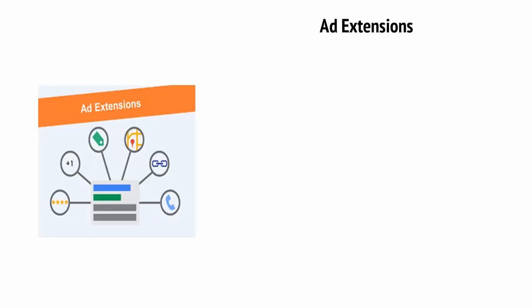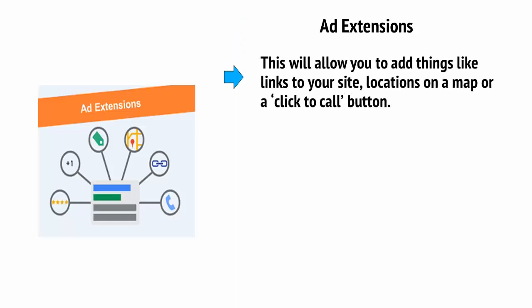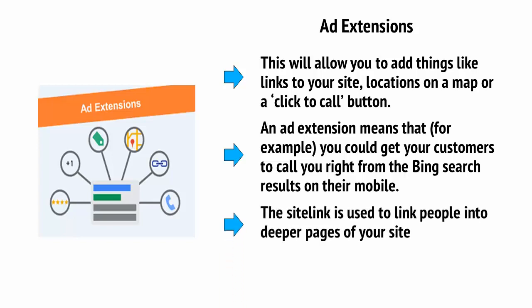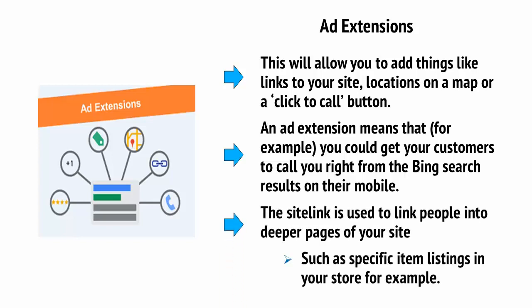Another neat feature of Bing is the ability to add ad extensions. This will allow you to add things like links to your site, locations on a map, or a click-to-call button. You could get your customers to call you right from the Bing search results on their mobile. The site link is used to link people into deeper pages of your site, such as specific item listings in your store.